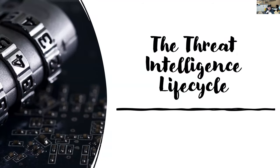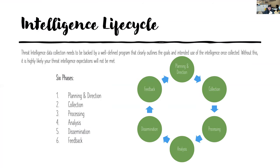Let me take you through the threat intelligence life cycle. There are six phases: planning and direction, collection, processing, analysis, dissemination, and feedback. They all play a very key role when it comes to threat intelligence.